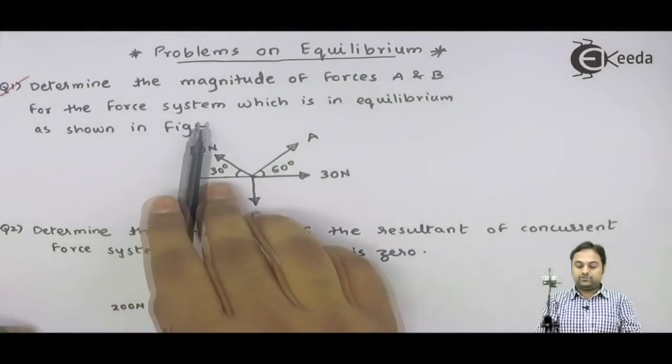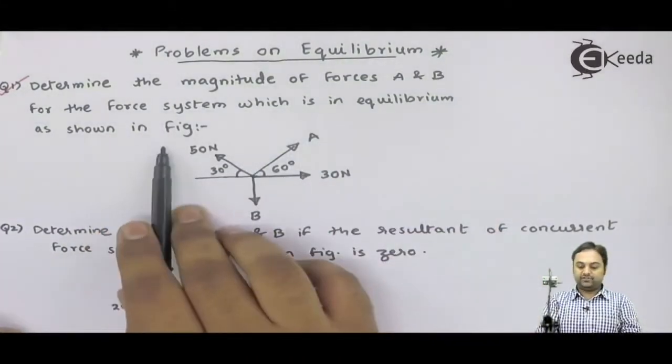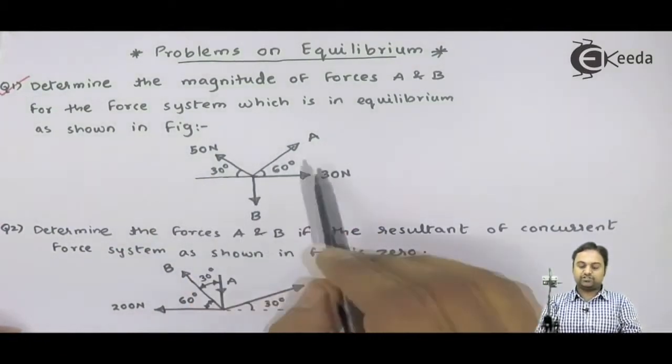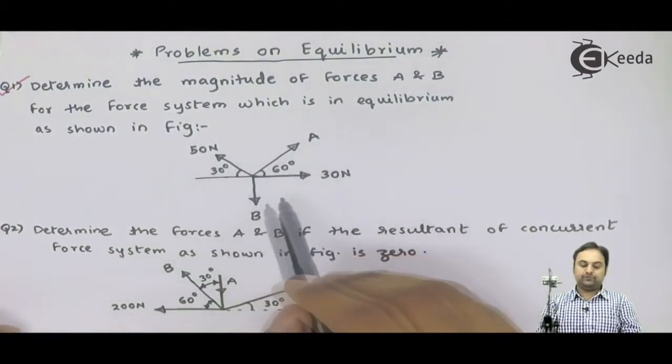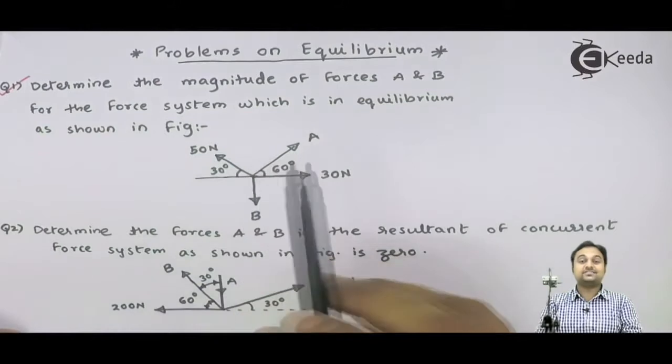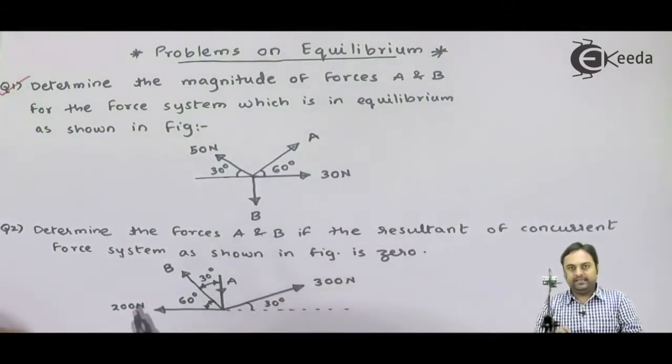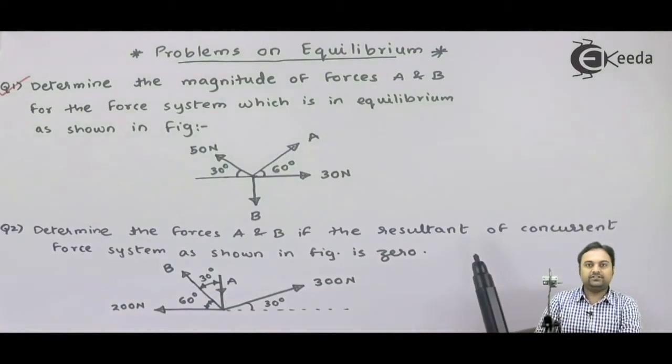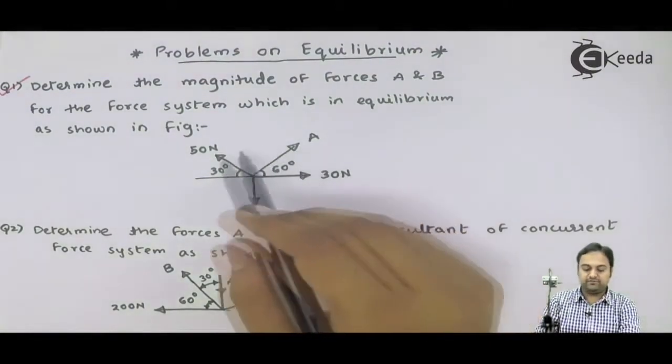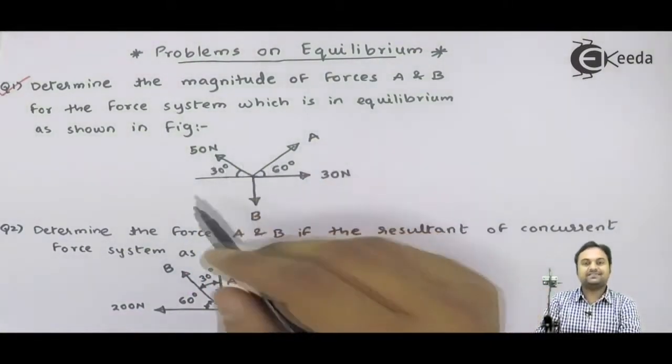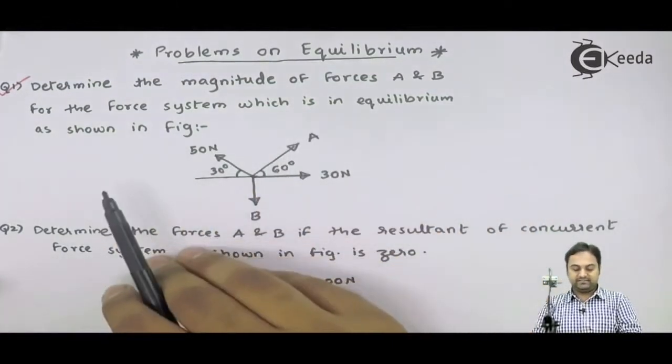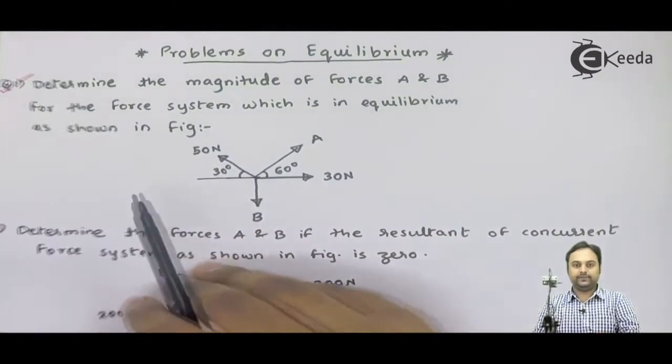Next, for the force system which is in equilibrium as shown in figure - it means they have told us that this force system, because of the action of all these forces, the system is in equilibrium. In equilibrium means there are no disturbances. The resultant, you can say that effect of resultant over these, is cancelled out by the equilibrium force. So now it is said that this force system is in equilibrium.